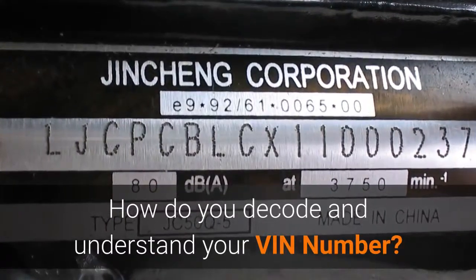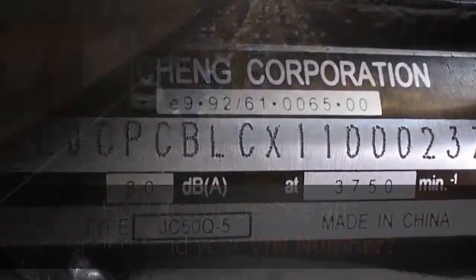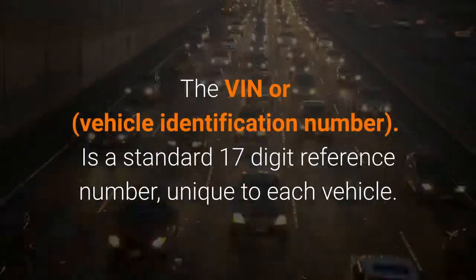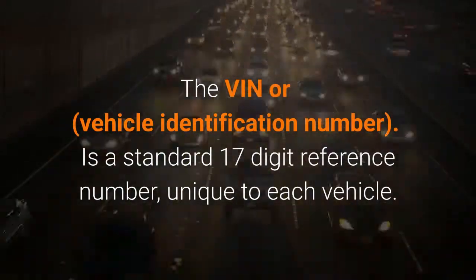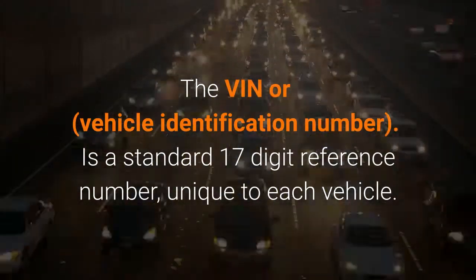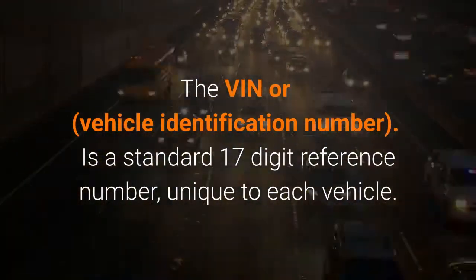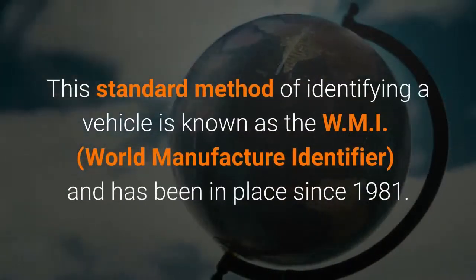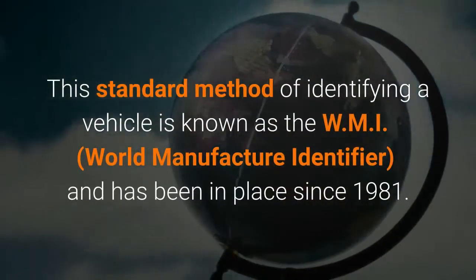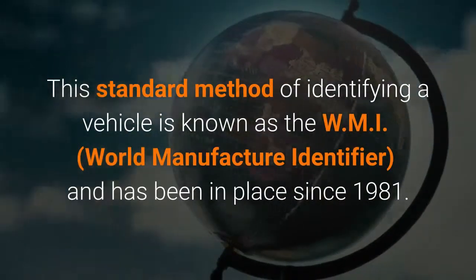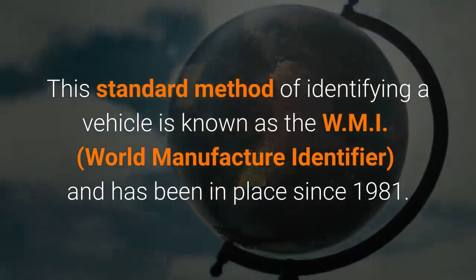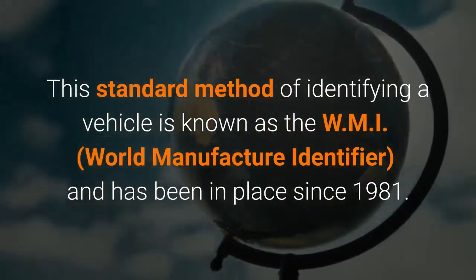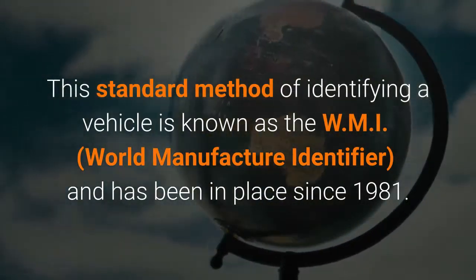How do you decode and understand your VIN number? The VIN, or vehicle identification number, is a standard 17-digit reference number unique to each vehicle. This standard method of identifying a vehicle is known as the WMI and has been in place since 1981.